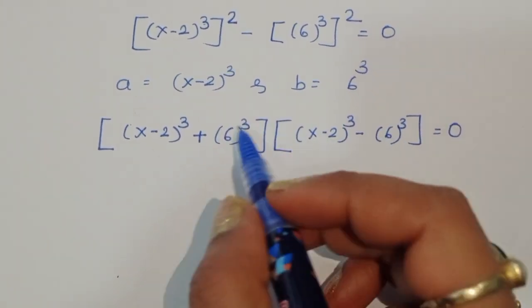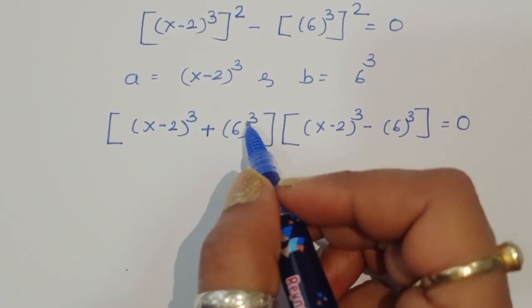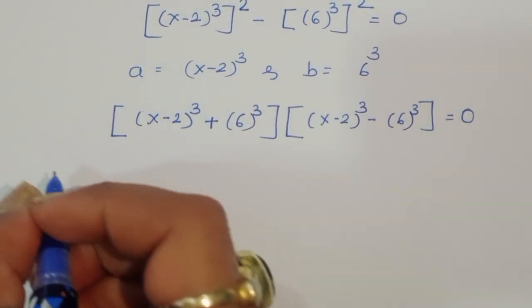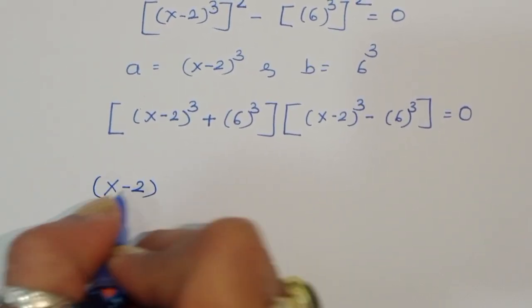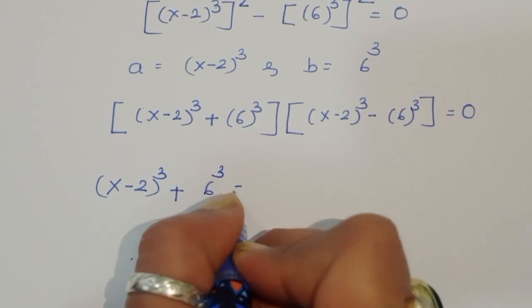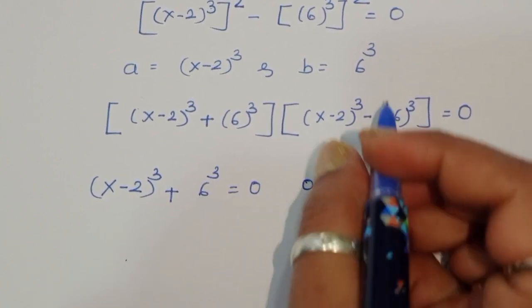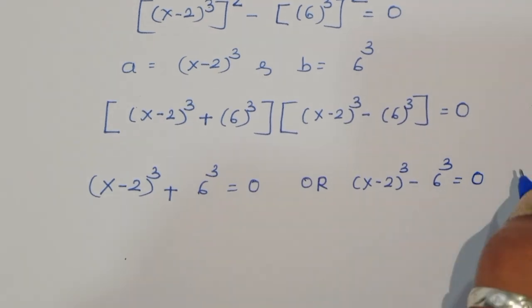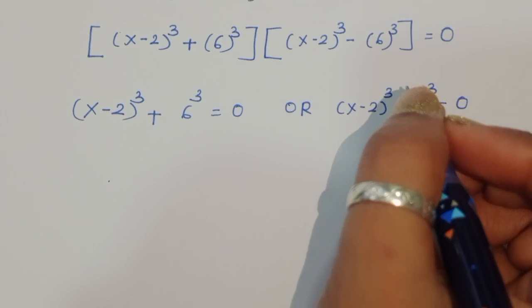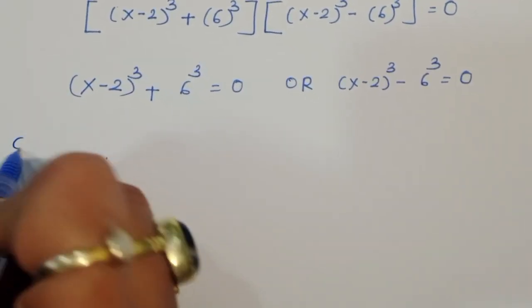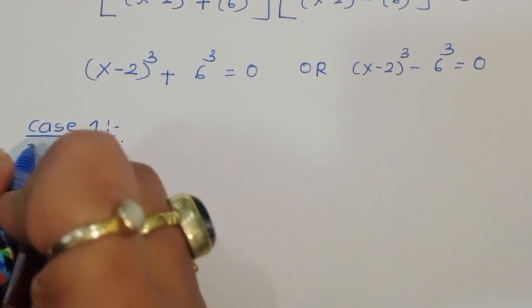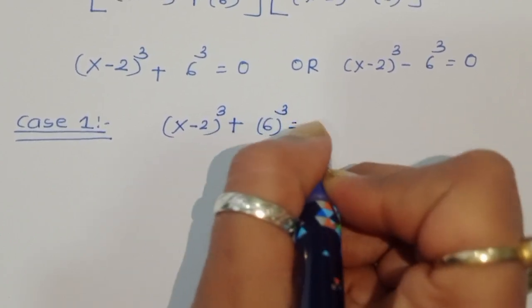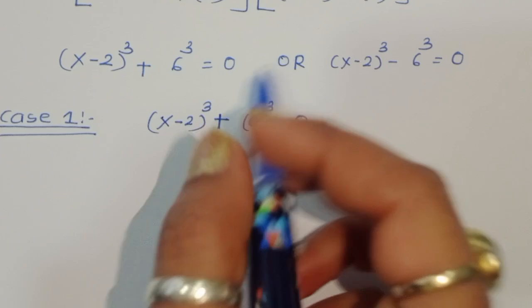Now we got two equations: the first one is (x minus 2)^3 plus 6^3 equals 0, and the next one is (x minus 2)^3 minus 6^3 equals 0. We take them one by one. Case 1: (x minus 2)^3 plus 6^3 is equal to 0.